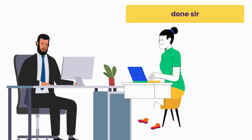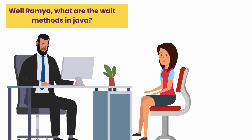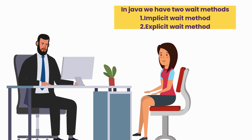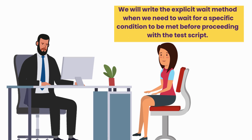Okay, let me check the output. What are the wait methods in Java? In Java, we have two wait methods — implicit wait and explicit wait. We write the implicit wait method at the beginning of the program; it applies to the entire driver section. We write the explicit wait method when we need to wait for a specific condition to be met before proceeding with the test script.